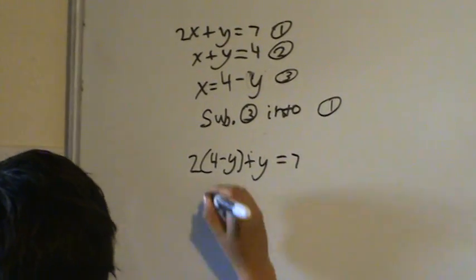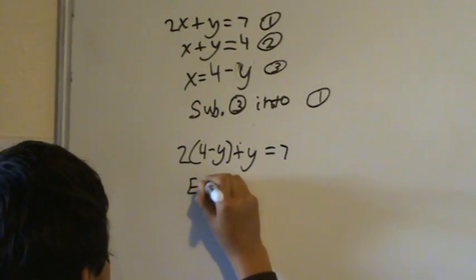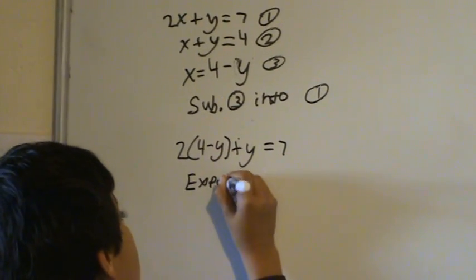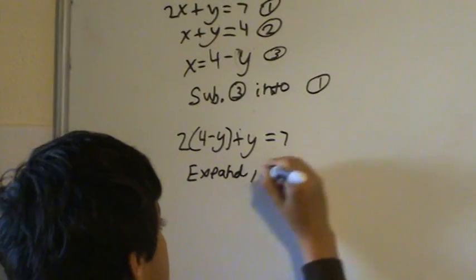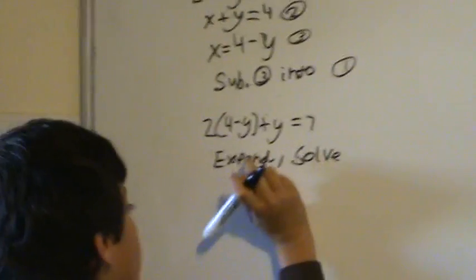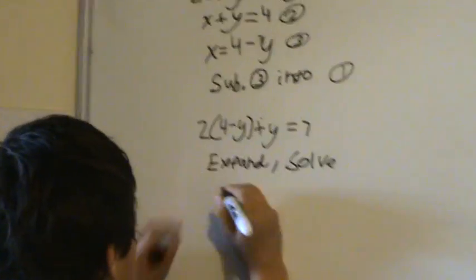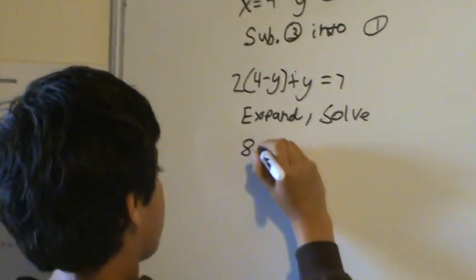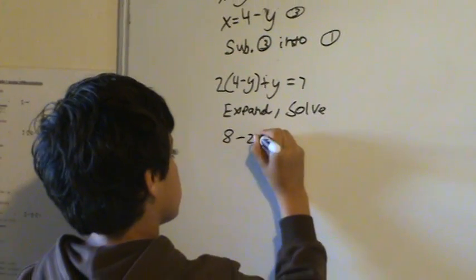And now I'll expand. And then solve. 2 by 4 is 8. 2 by minus y is minus 2y.